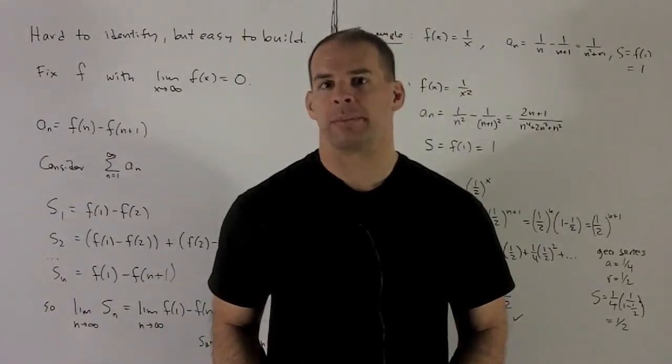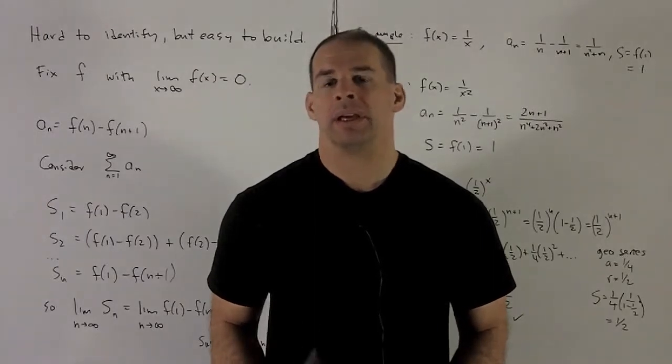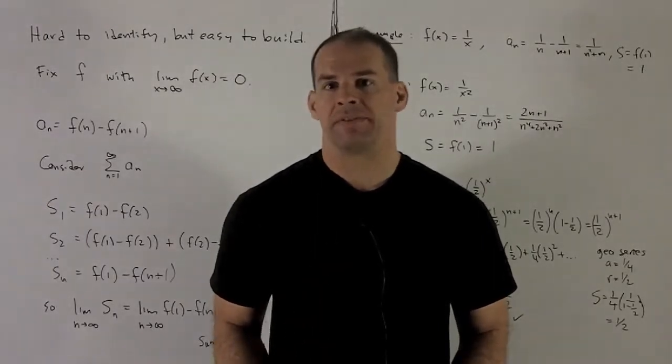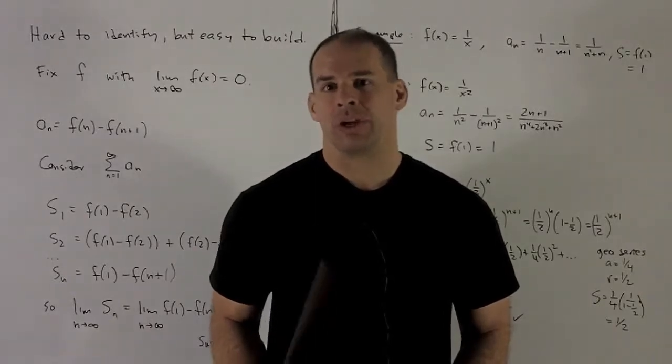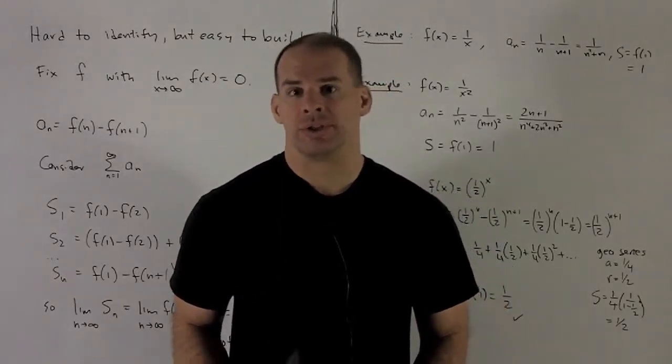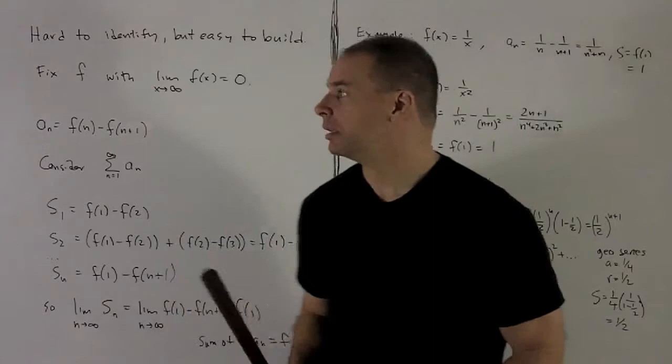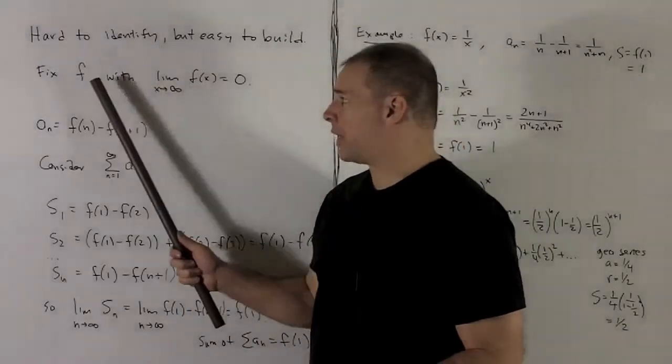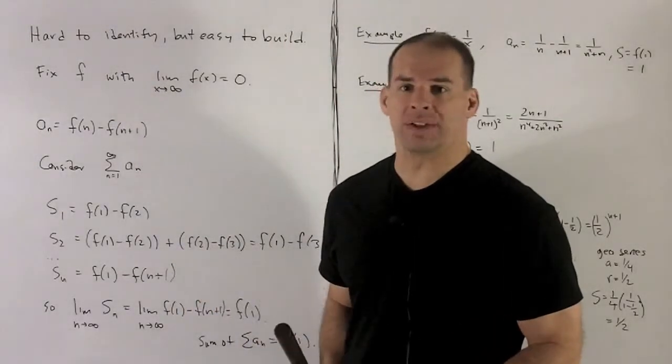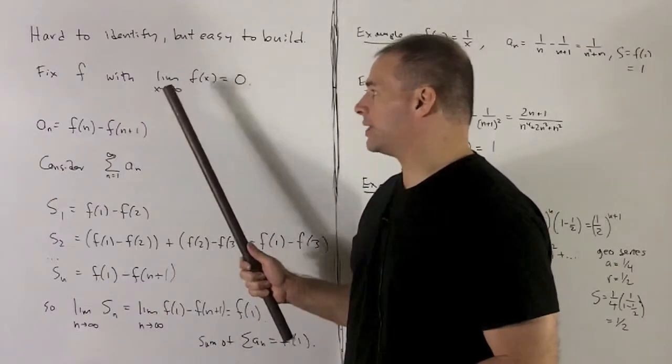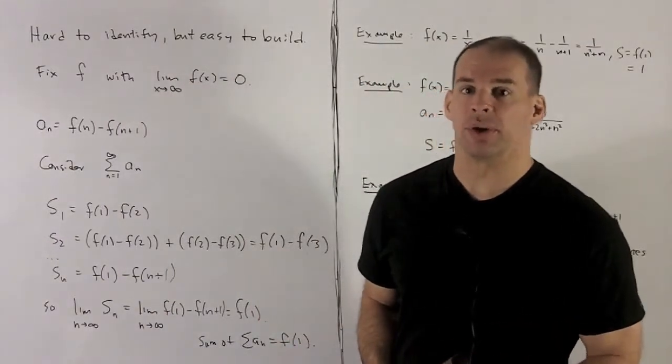So the example seems like it kind of magically worked out. Telescoping series, a little bit difficult to identify out in the wild, but they're real easy to cook up on your own. So let's see how we'd go about that. So start with a function, say defined on the positive real numbers, and its limit as x goes to infinity of f of x equal to 0.